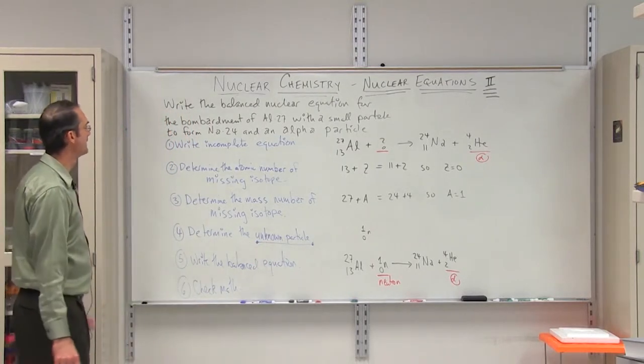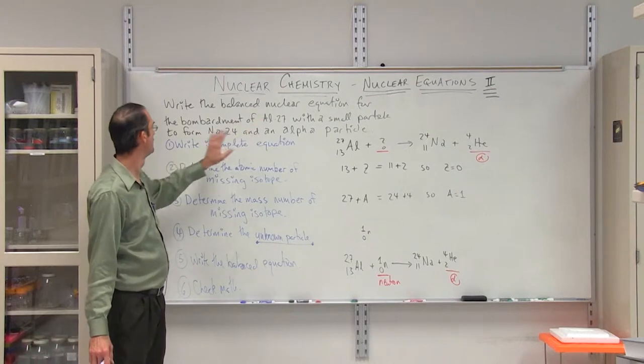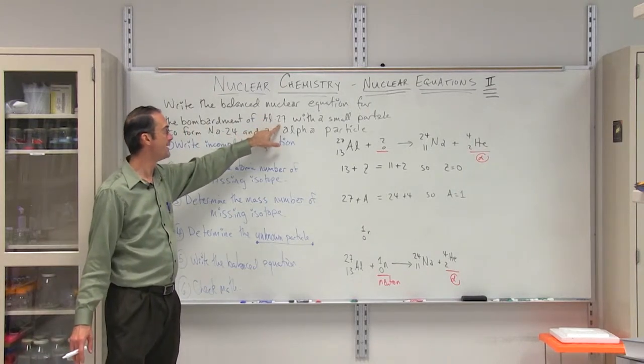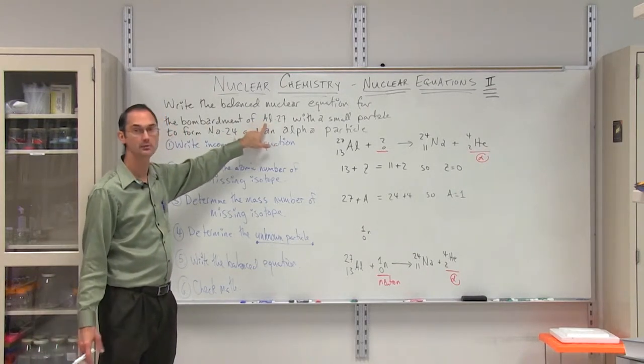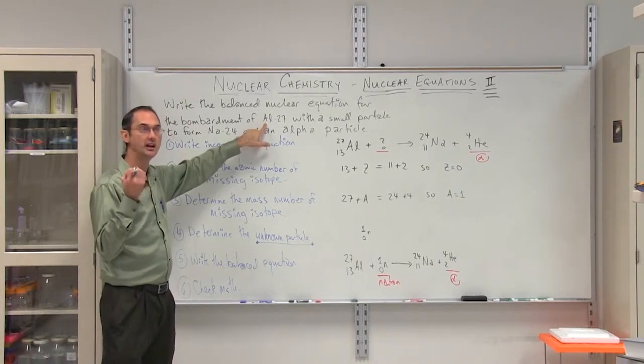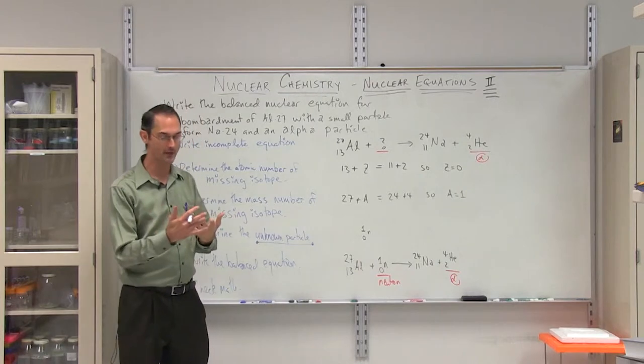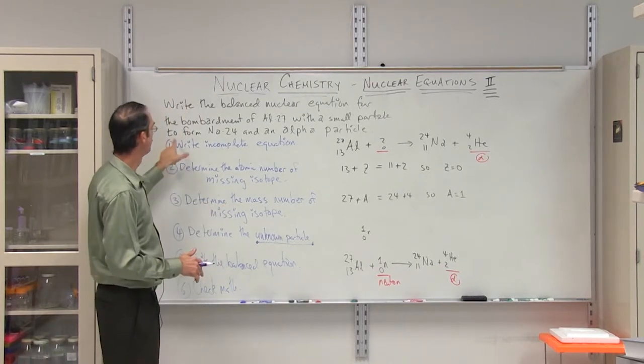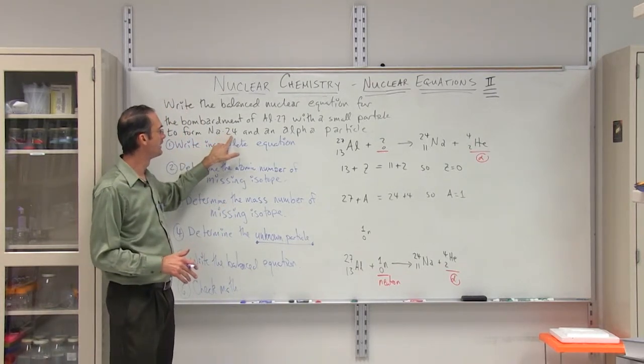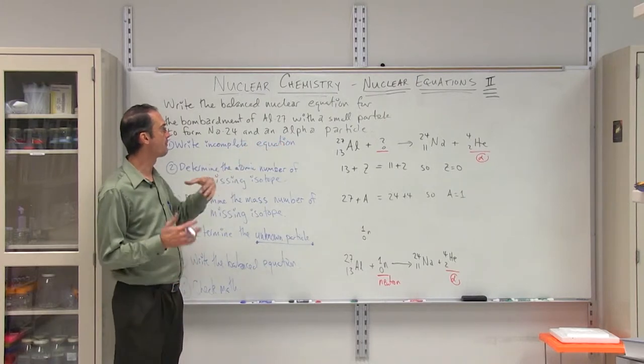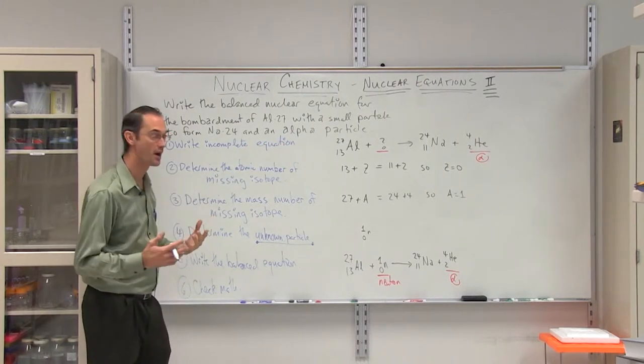The problem in this case is to write the balanced nuclear equation for the bombardment of aluminum-27. This will be the mass number, because of course aluminum has its own inherent atomic number, with a small particle, and that's probably going to be one of the alpha, beta, gamma, or positrons, to form sodium-24 and an alpha particle. So, the alpha particle is going to be one of our products.